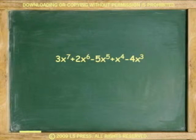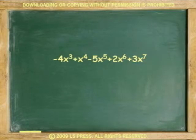We can write polynomials in descending order according to the value of the exponent, seven, six, five, four, three, or in ascending order according to the value of the exponent, seven, three, four, five, six, seven.